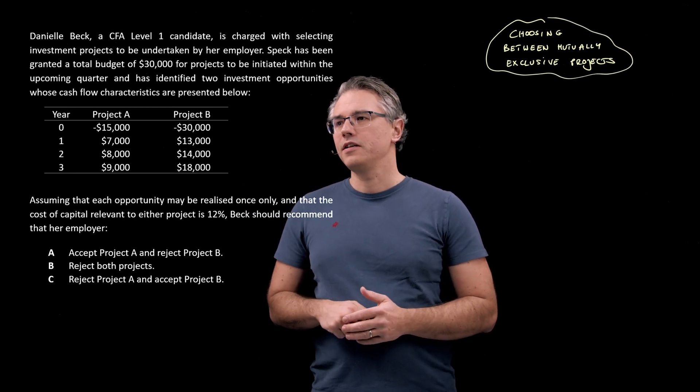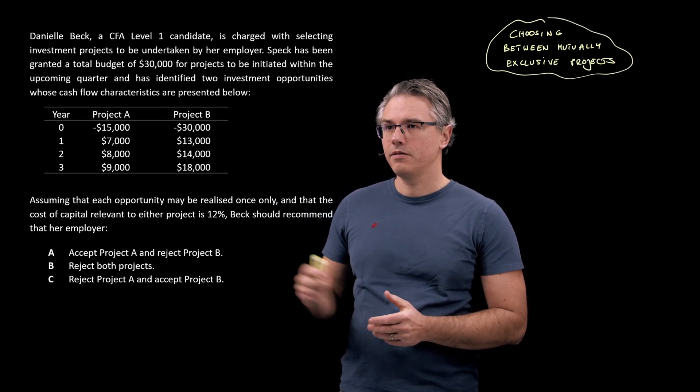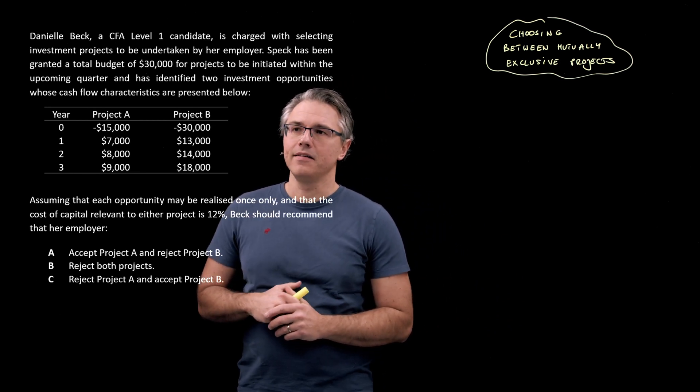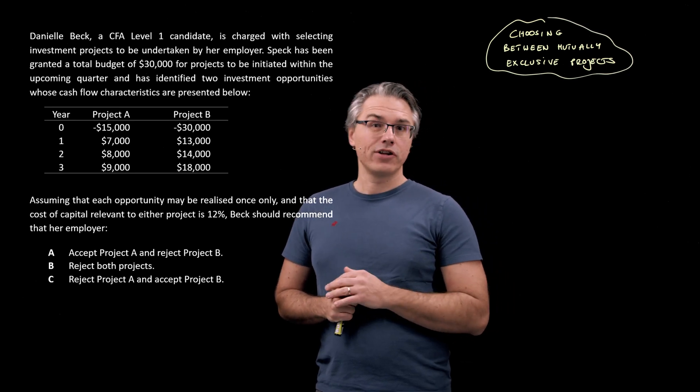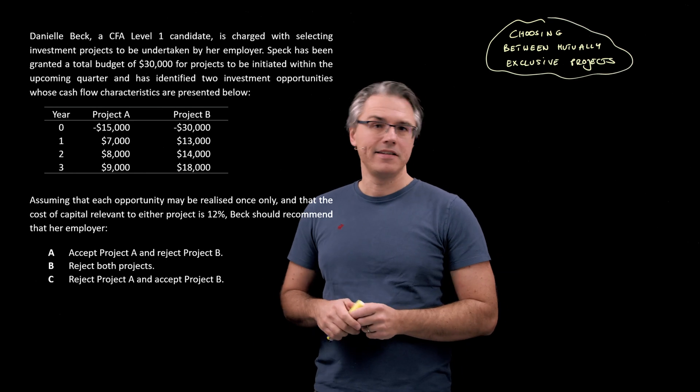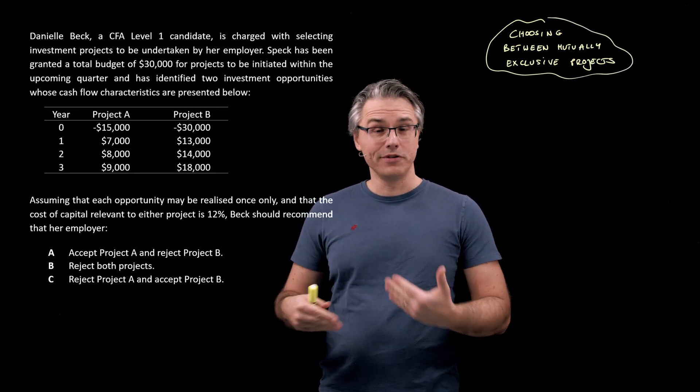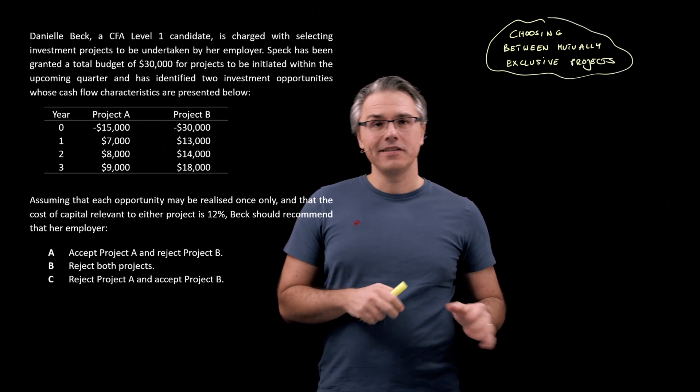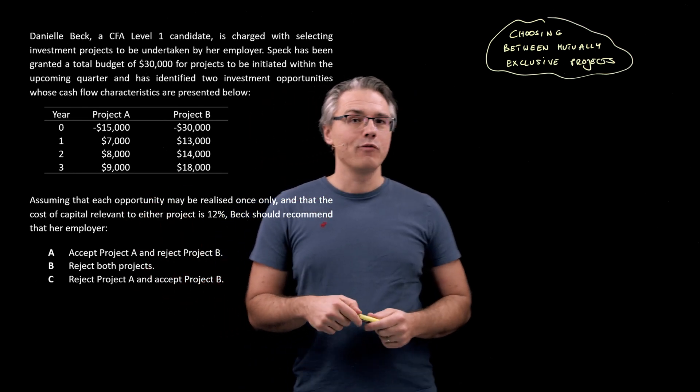And you've got the cash flows here. Assuming that each opportunity may be realized once only and that the cost of capital relevant to either project is 12%, Beck should recommend that her employer... Please appreciate that the limit we're facing here is that we've got a total budget of £30,000 only and a single project can only be done once. Now, Project B itself requires an initial outlay of £30,000, so that basically eats up the entire budget. Project A requires half that but it cannot be done more than once. So you either invest £15,000 in it and you can't replicate it for the second time, and that also completely eliminates your ability to do Project B because you've run out of budget. So let's see what the recommendation should be.